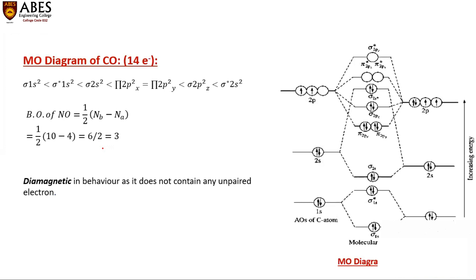The next heteronuclear diatomic molecule is CO, which contains 14 electrons. For 14-electron molecules, pi 2px and pi 2py fill first, then sigma 2pz. The electronegativity difference between carbon and oxygen is greater, so their energy levels are different.